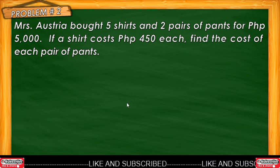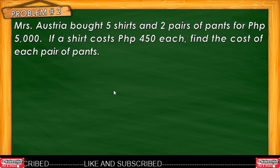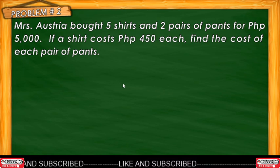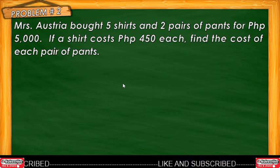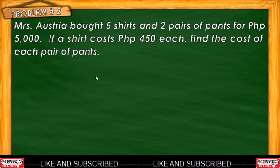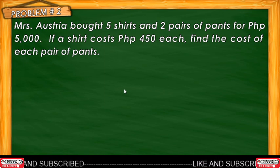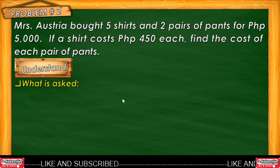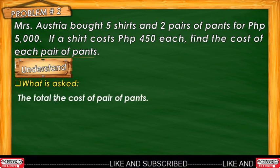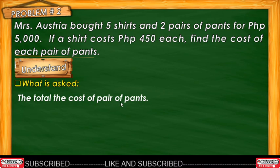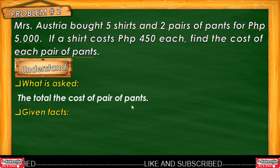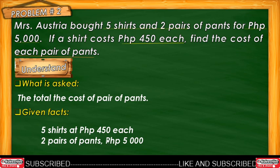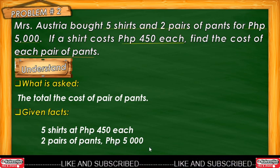Let's proceed to Example 2. Mrs. Austria bought 5 shirts and 2 pairs of pants for 5,000 pesos. If a shirt costs 450 pesos each, find the cost of each pair of pants. This is a non-routine word problem. What is asked? The cost of each pair of pants. What are the given? 5 shirts at 450 pesos each, 2 pairs of pants, and a total of 5,000 pesos.